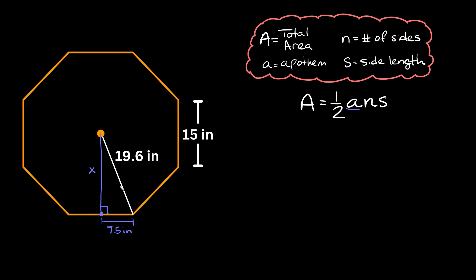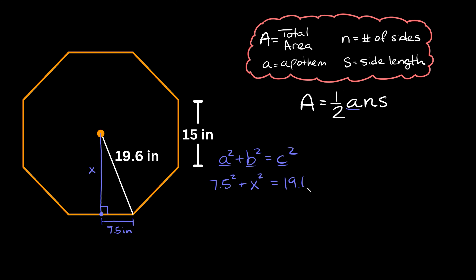On this right triangle we know two sides: the hypotenuse and one of the shorter legs, so we just need to find the missing leg. We can use the Pythagorean theorem — a squared plus b squared equals c squared, where a and b are the two shorter sides and c is the hypotenuse. So we plug in: 7.5 squared plus x squared equals 19.6 squared.